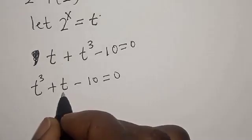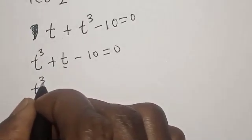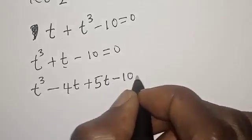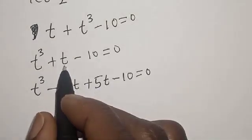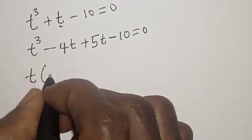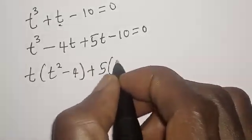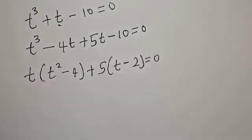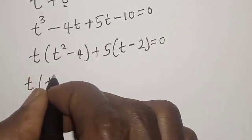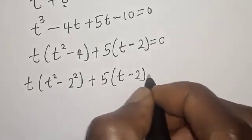This is t raised to power 3 and this is t. We want to manipulate this t such that the equation does not formally change. We split t as minus 4t plus 5t, so t raised to power 3 minus 4t plus 5t minus 10 is equal to 0, noting that minus 4t plus 5t gives t. Now factor t out from t raised to power 3 minus 4t: we have t times t squared minus 4, plus 5 times t minus 2 is equal to 0. And t squared minus 4 is t squared minus 2 squared, plus 5 times t minus 2 is equal to 0.